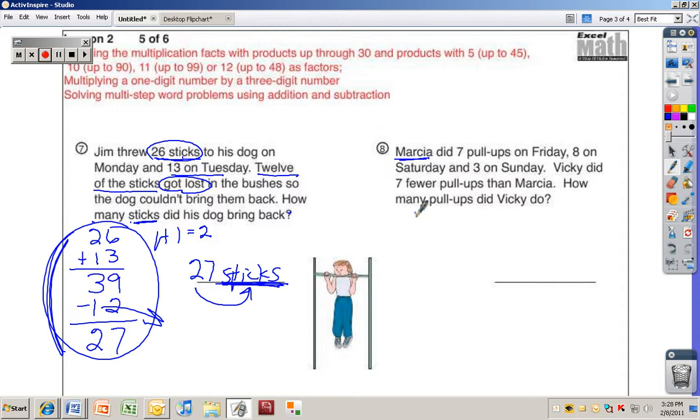So first of all, we have to figure out how many Marcia did. And that's 7, 8, and 3. So you should have written this problem out. You can write it sideways too. It doesn't have to be up and down. That should come out to be 18.